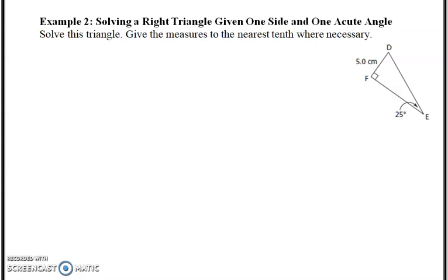We're picking up at example 2. We're going to solve a right triangle given one side and one acute angle. In this triangle we know that angle F is 90 degrees, and angle E is 25 degrees. We want to find all the measures here—solve this triangle means find everything that's missing. So we're missing two sides and an angle. The easiest thing to find here is angle D.